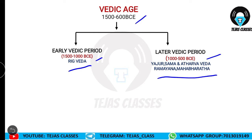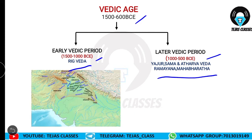We are going to learn in detail in part 2 about these Vedas — how many hymns there are and what are the subdivisions. For now, we will concentrate on the Aryan invasion. This is the geographical map of the early Vedic period. When the Aryans first came to India, they settled in the north-western area.